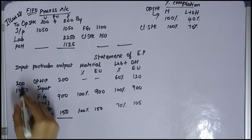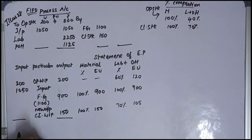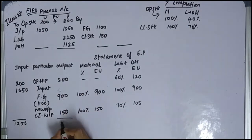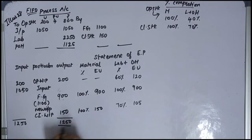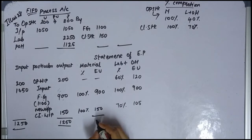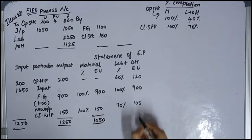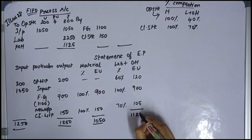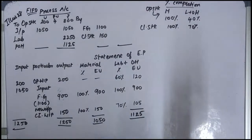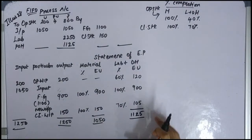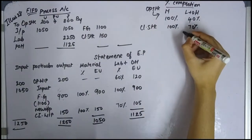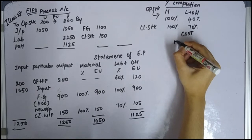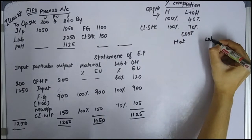Total units: 200 plus 1050 gives 1250. For equivalent units — material: 900 plus 150 gives 1050. For labor and overhead: 70% of closing WIP so 70% of 150 is 105; total is 900 plus 125 giving 1125.